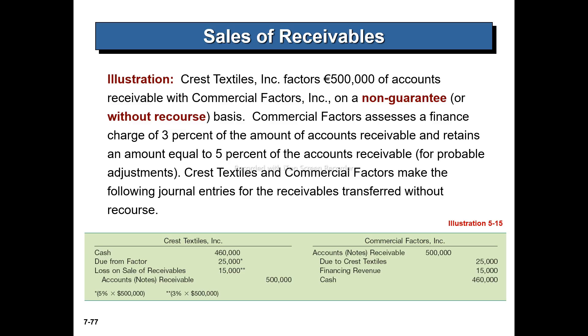The retaining amount equals 5% of accounts receivable for approval adjustment. This amount is held as a withholding based on the financial charge terms.